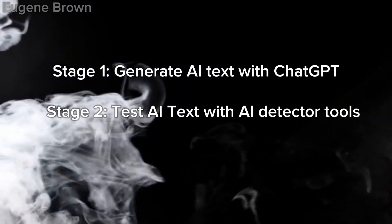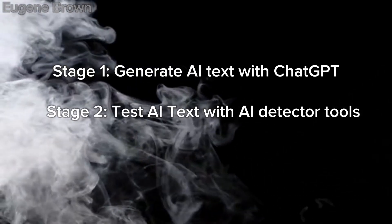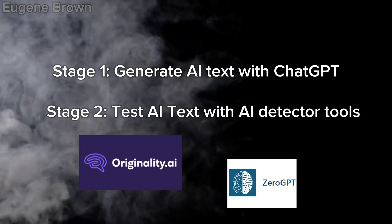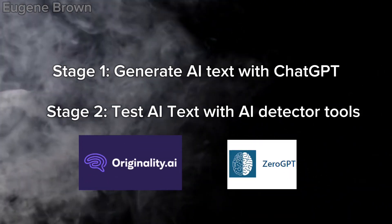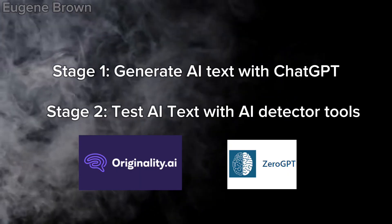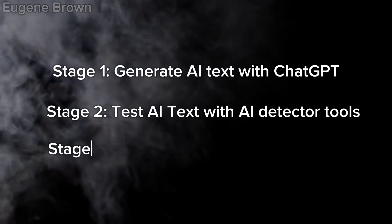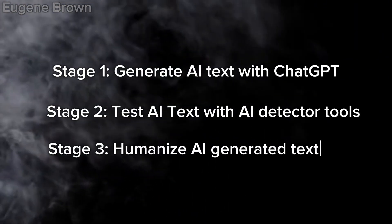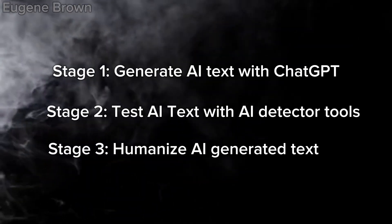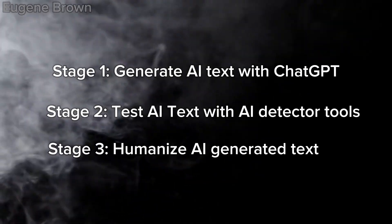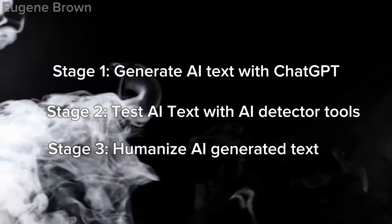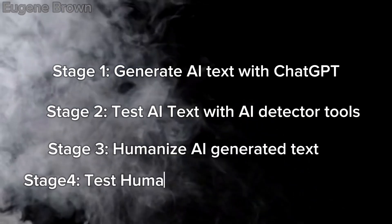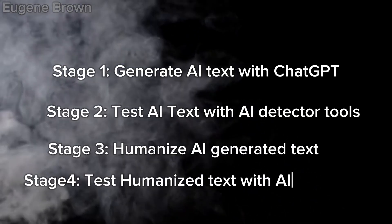Then I will test that article on AI detector tools like Originality AI or ZeroGPT to confirm that it is AI-written. Thirdly, I will humanize this AI-generated text using both tools — Bypass AI and Quillbot.